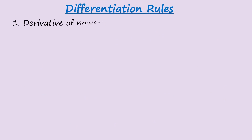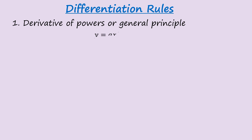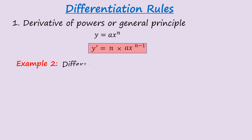Differentiation rules. Number 1: derivative of powers, or the general principle. If y = ax^n, then y′ = n·ax^(n−1) — the power n comes down and multiplies the coefficient, and the power is reduced by one. Let's consider an example.